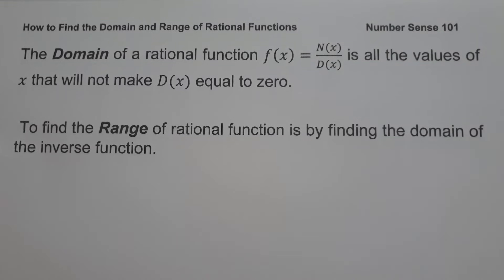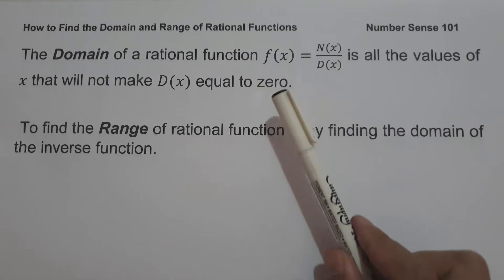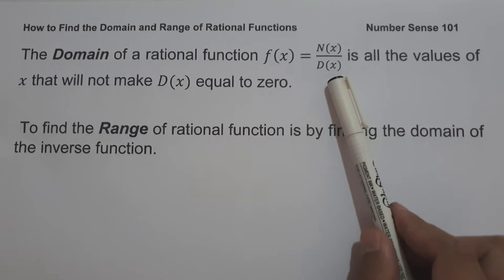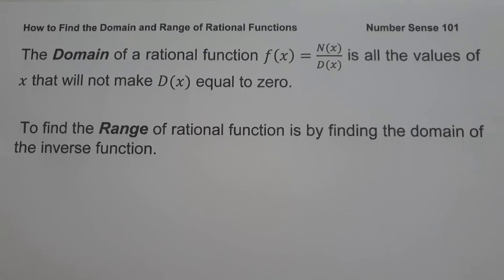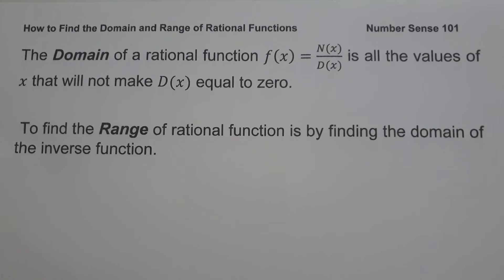For today's video, we are going to talk about how to find the domain and range of rational functions and we are going to explain everything in detail. The domain of rational function f(x) = n(x)/d(x) is all the values of x that will not make d(x) equal to 0. To find the range, we find the domain of the inverse function, or alternatively, find the value of the horizontal asymptote.